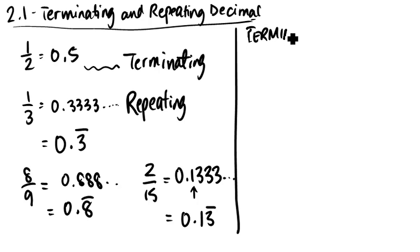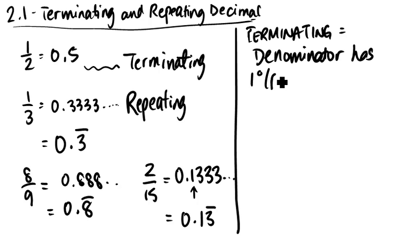terminating means that the denominator has prime factors of 2 and/or 5 only.